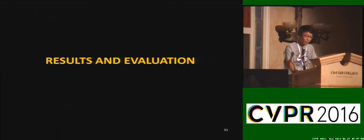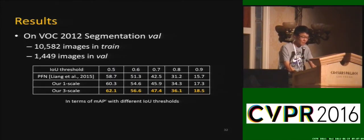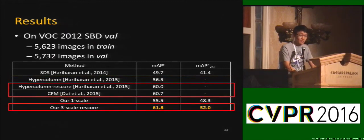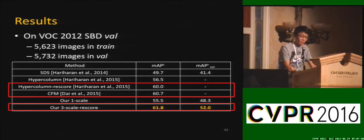We conduct experiments on three datasets: PASCAL VOC 2012 segmentation, SBD, and Microsoft COCO. We compare with PFN, which produced state-of-the-art results on the VOC 2012 segmentation validation subset — PFN is also a proposal-free method. Our patch-based method with one scale and three-scale input performs decently. On SBD, our method with one-scale input performs comparably with Hypercolumn without a rescore step, and with three scales and rescore, our method outperforms previous work. Notably, we only report 15 objects per image on average before the NMS step, much fewer than proposal-based methods.